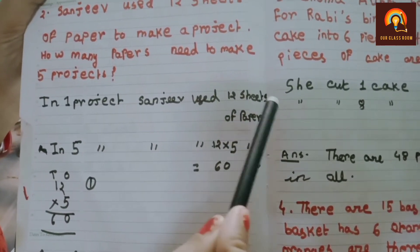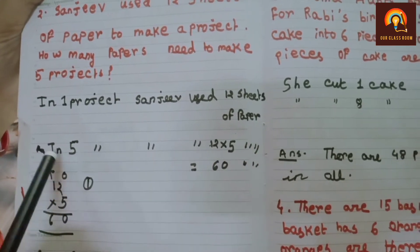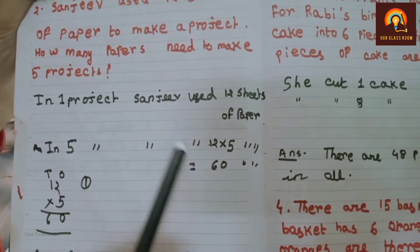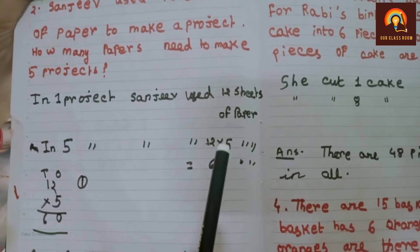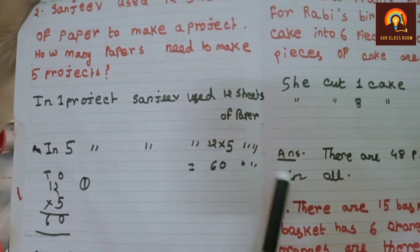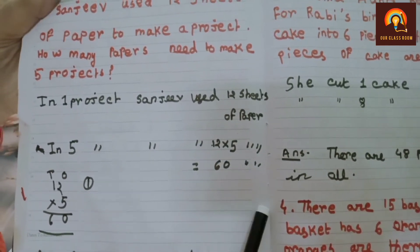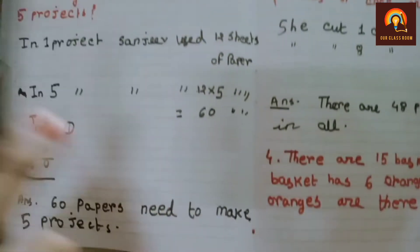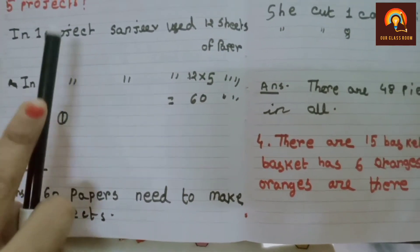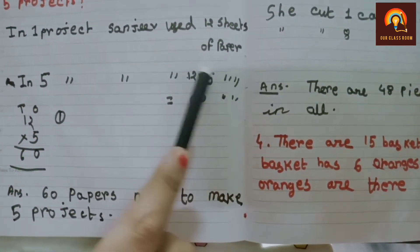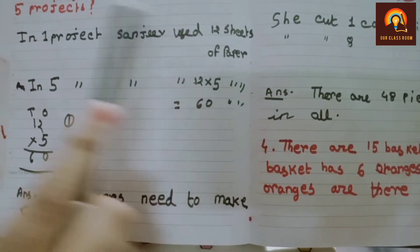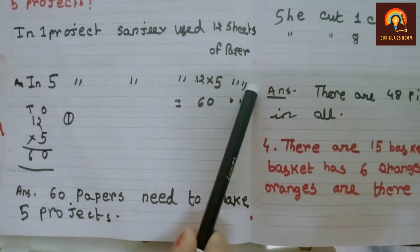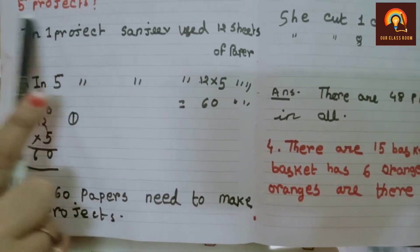In 5 projects, Shonjeev used 12 into 5 sheets of paper. In 1 project, Shonjeev used 12 sheets of paper. In 1 project, Shonjeev used 12 sheets of paper. How many projects? 5.